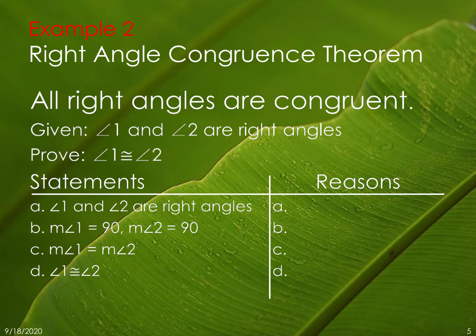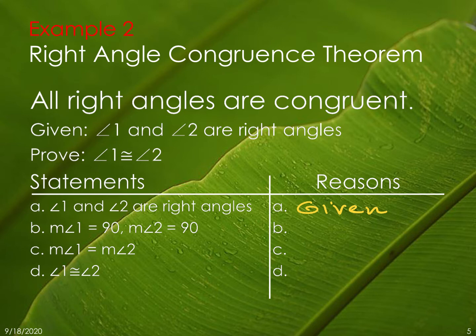I've given you the statements — we just have to come up with the reasons. Do not leave out the given, so reason number one is 'given' — that angles 1 and 2 are right angles. The next thing I'm going to establish is what a right angle is: the measure of angle 1 equals 90 and the measure of angle 2 equals 90. This is the definition of right angles, abbreviated DEF of right angles.